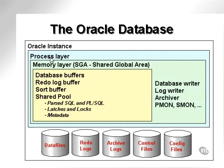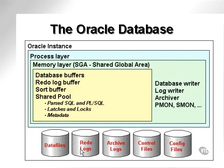The processes are used to communicate between the memory layers and the database files. Looking at the database files, we see we have data files. The data files store the actual data. The redo logs retain a record of changes to the data files. The archive logs are historical records or copies of the redo logs, since the redo logs will recycle. The control files contain pointers, where these pointers provide a connection between the redo and archive logs and the data files and the various memory structures.